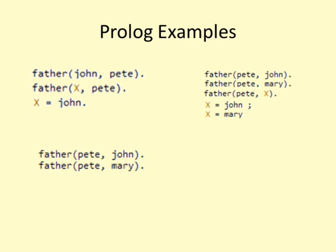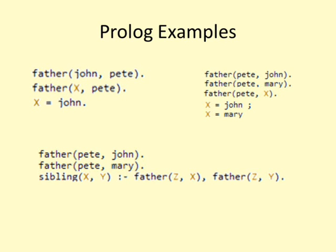With the facts father(Pete, John) and father(Pete, Mary), we can also define a rule: siblings(X, Y) :- father(Z, X), father(Z, Y). This is read as X is a sibling of Y, provided there is a Z that is the father of X and also the father of Y. We can ask who are the siblings of Mary by writing sibling(Mary, X), and Prolog gives the answers X = John and X = Mary. Mary is considered a sibling of herself because X and Y are siblings if they have the same father.